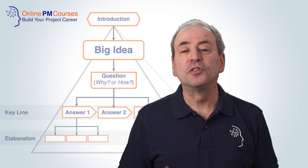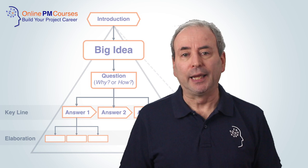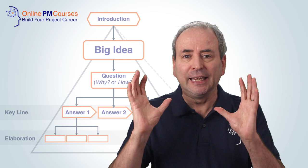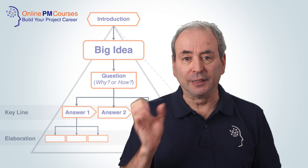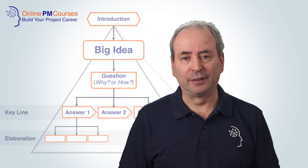The secret to effective, high-impact communication on projects is the pyramid approach: start with a big idea, then a key line of three — or maybe four or five — items to either justify or describe your big idea, and then underneath that, elaborate on the key line with additional detail.